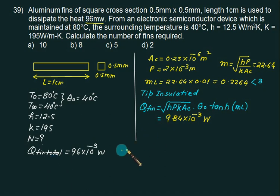We'll put this value back here. Q fin total equals to N multiplied by the heat transfer from single fin equal to Q fin. Substitute all values and select the N as integer number. So approximately 10 fins will be required. That is choice A is correct.